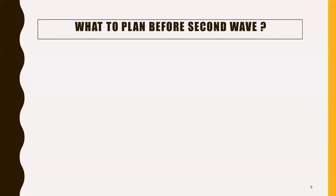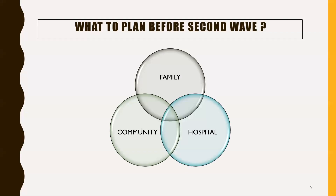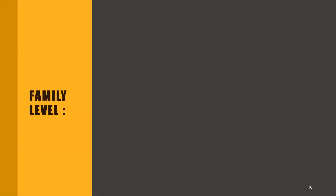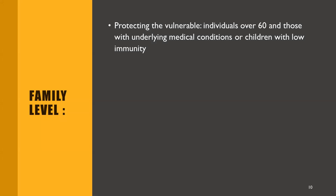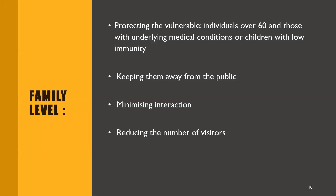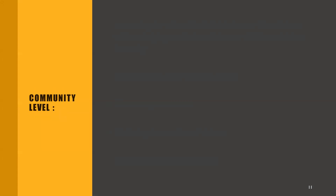Before a second wave, three components each have a specific role: family, community, and hospital. At the family level, we should protect vulnerable individuals — those over 60 and those with underlying medical conditions or low immunity — by keeping them away from the public, minimizing interaction, reducing the number of visitors, and promoting physical distancing.